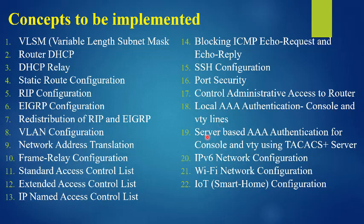The nineteenth concept is server-based Triple-A (AAA) authentication for console and VTY lines, using an authentication server. The twentieth concept is IPv6 network configuration. The twenty-first concept is Wi-Fi network configuration. The last — twenty-second — concept is IoT configuration, specifically a smart home or smart office configuration. These are all 22 different concepts to be implemented in a single Packet Tracer file.